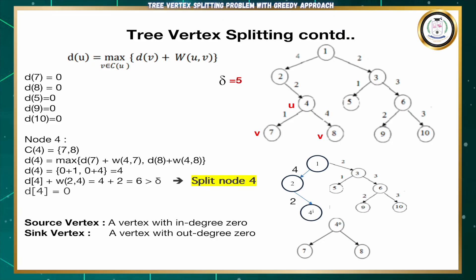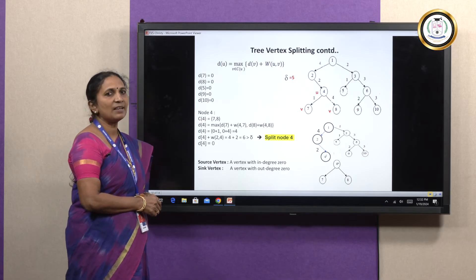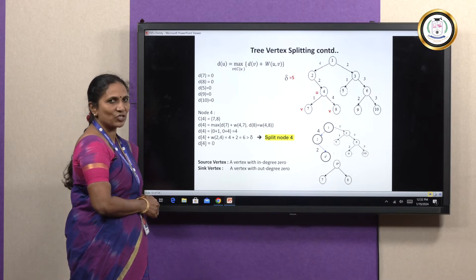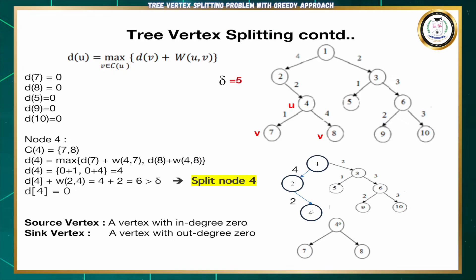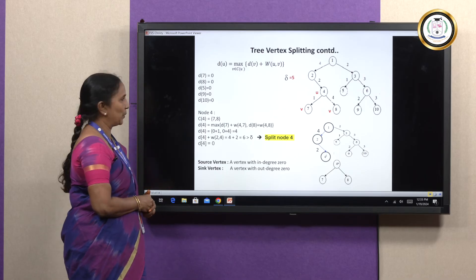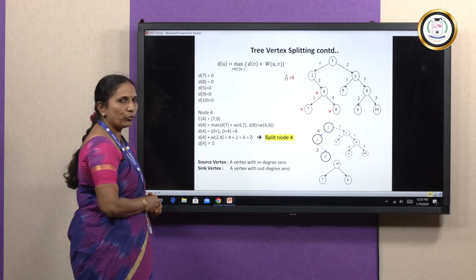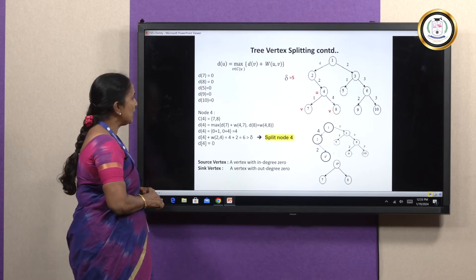We will see how to solve this problem. We are given a weighted directed tree. In this weighted directed tree, we are sending signals from one source to destination, and some signal loss is happening. The signal loss is given on the edges and the tree is directed. The tolerance level is given as delta = 5. First, we need to identify all the leaf nodes. In this case, node 7, node 8, node 5, node 9, and node 10 are the leaf nodes. All the leaf nodes are set to a value of 0. Now we need to find the delay for node 4.